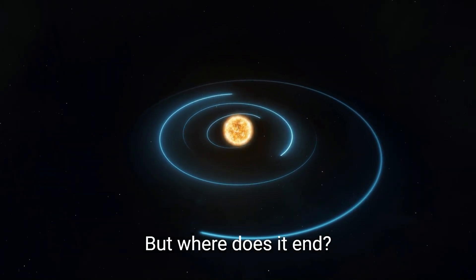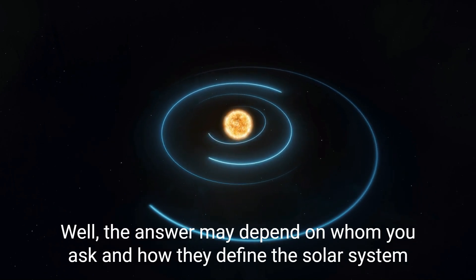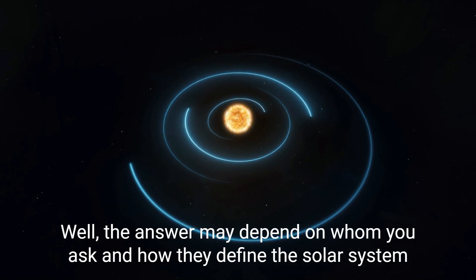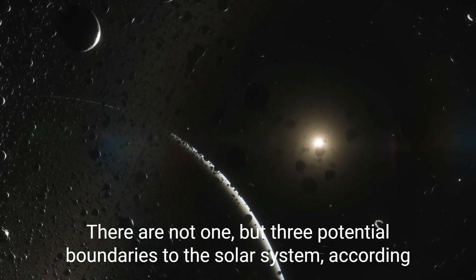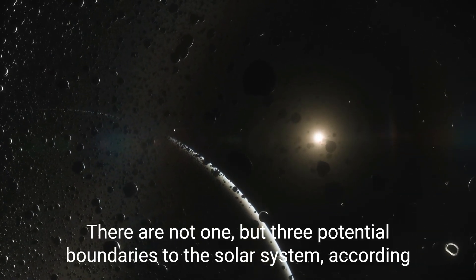But where does it end? Well, the answer may depend on whom you ask and how they define the solar system. There are not one, but three potential boundaries to the solar system, according to NASA.